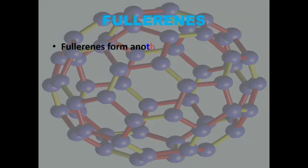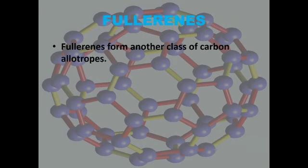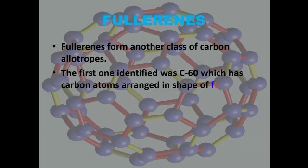Fullerenes form another class of carbon allotropes. The first one identified was C-60, which has carbon atoms arranged in the shape of a football.